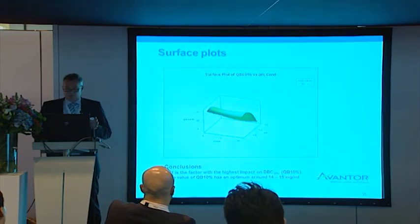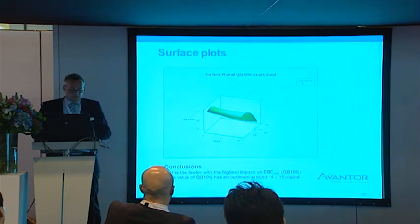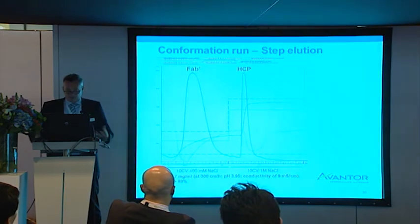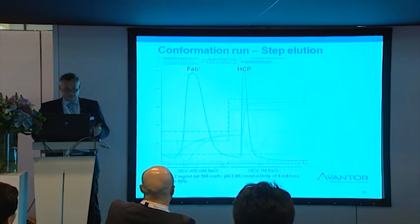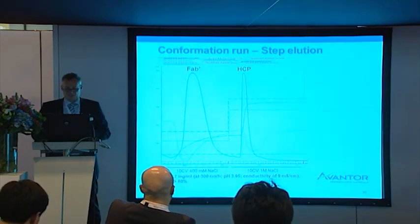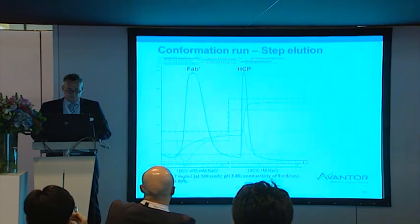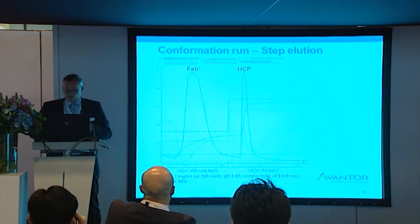The value of the binding capacity was calculated to be optimal at 14 to 15 milligrams per milliliter. This was the optimized separation after using the DOE optimization method, so the HCP is fully separated from the Fab product. In that way, you can purify this product in a very effective way.